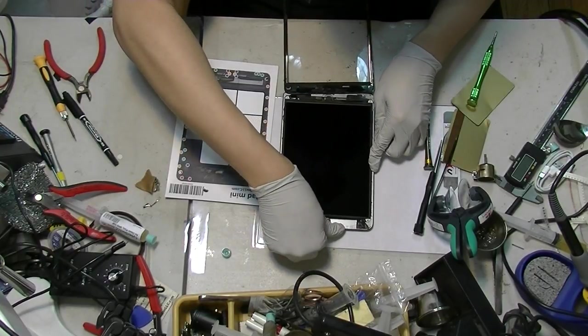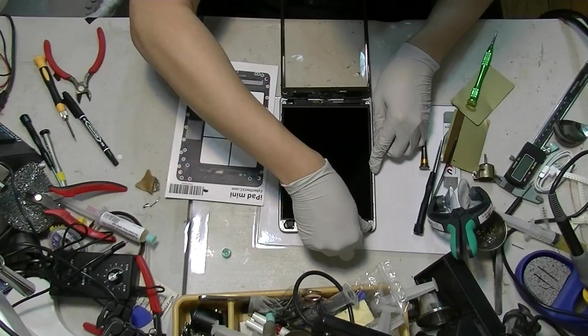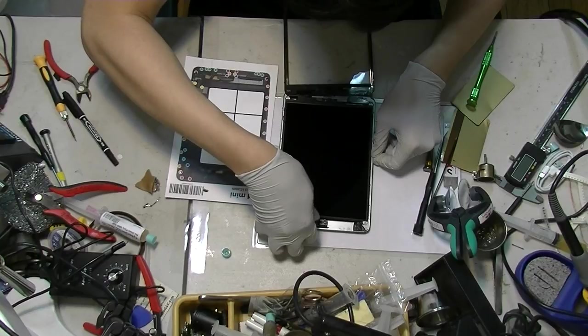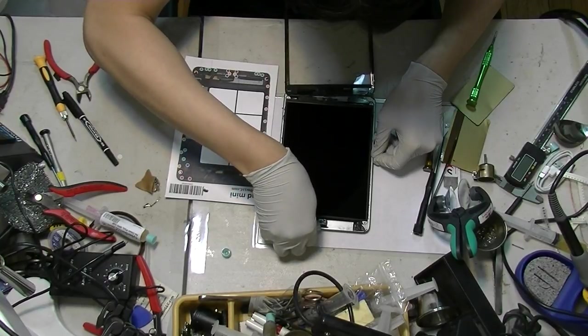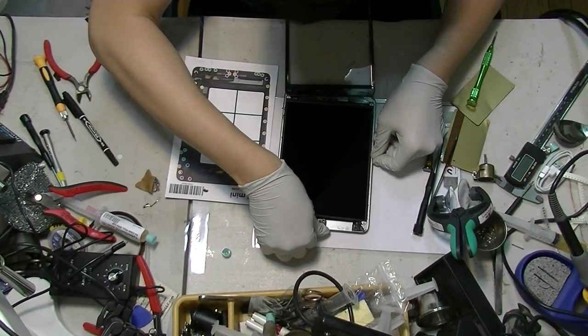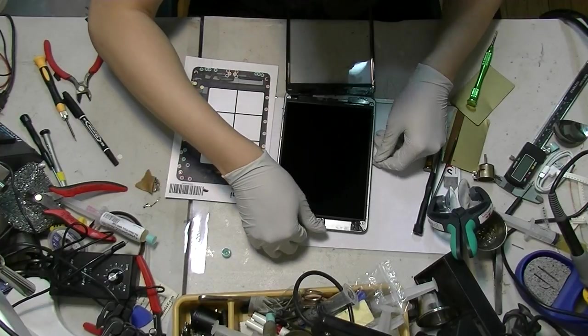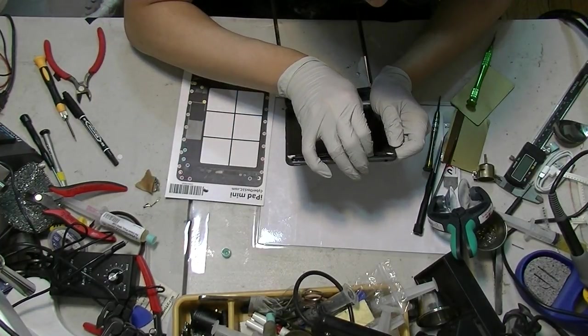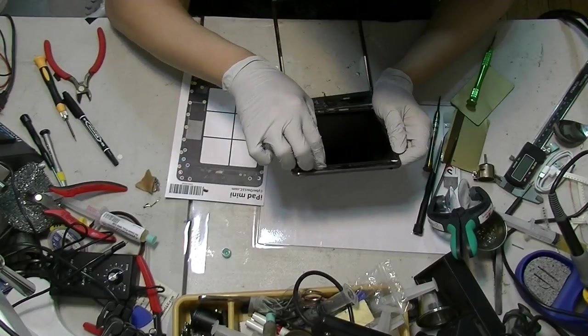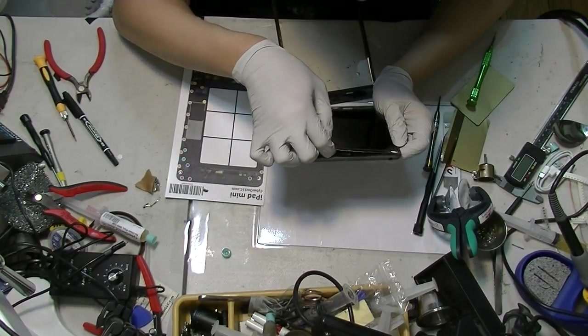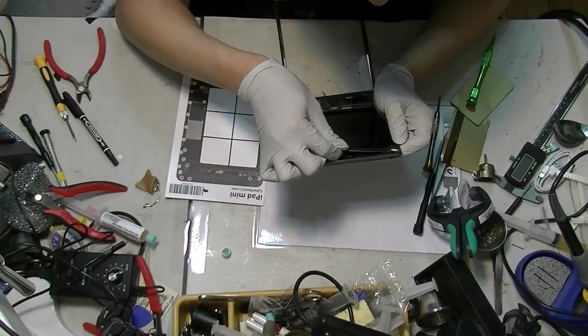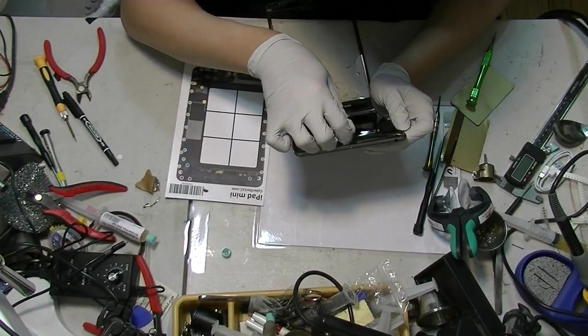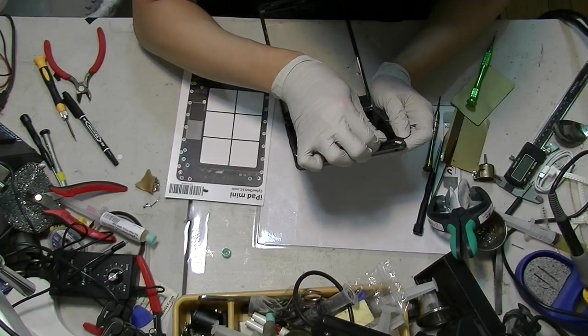Now I can separate the LCD screen. I'm getting some resistance as I separate the LCD screen. But, unless there's another screw, I think there must be a clipping magnet as well, which seems to be the case. For the LCD. I don't see any other screws.